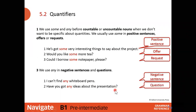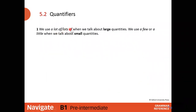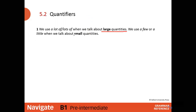We use 'a lot of' or 'lots of' — they are synonyms. When you include 'a,' you say 'a lot of'; when you omit 'a,' you say 'lots of.' We use these when we talk about large quantities. We use 'a few' or 'a little' when we talk about small quantities.